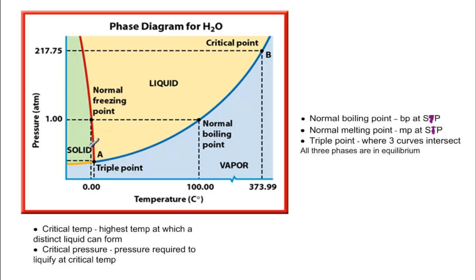The triple point is where you actually have all three phases in equilibrium — at a fairly low pressure and low temperature. The critical temperature is the highest temperature where you can have a distinct liquid. Anything above this critical point, you won't be able to distinguish between a liquid or a gas. You need to know the triple point, critical point, and how to find normal boiling point and normal freezing point at standard pressure.